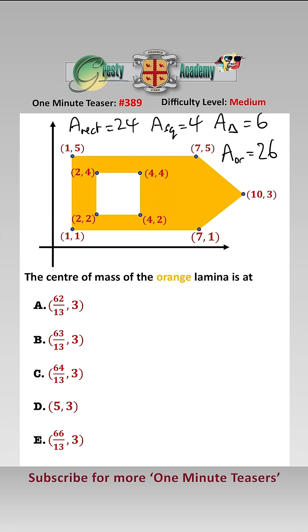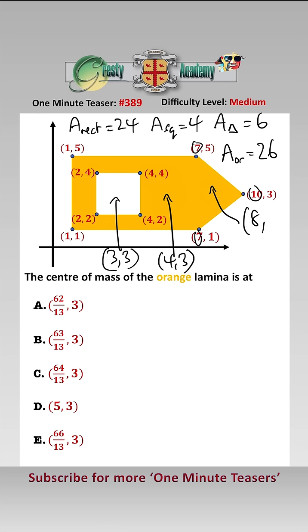Now, the centre of masses. We have the centre of mass of the square, by inspection, is (3, 3). The centre of mass of the rectangle, by inspection, is (4, 3). And the centre of mass of the triangle — we have to add up the x's and the y's and divide by 3. So that's 24 divided by 3, which gives us 8. 5 add 1 add 3, divided by 3, gives us 3. So those are the centres of mass.